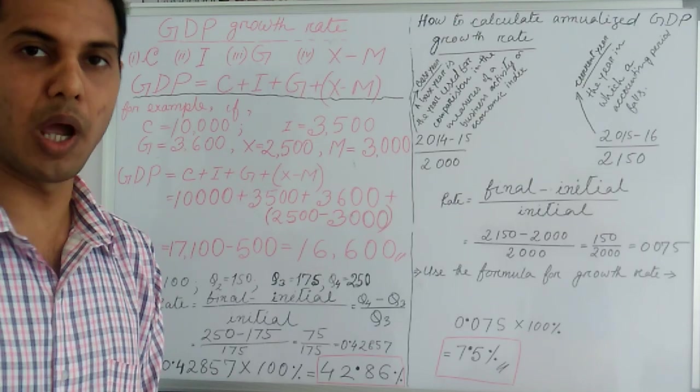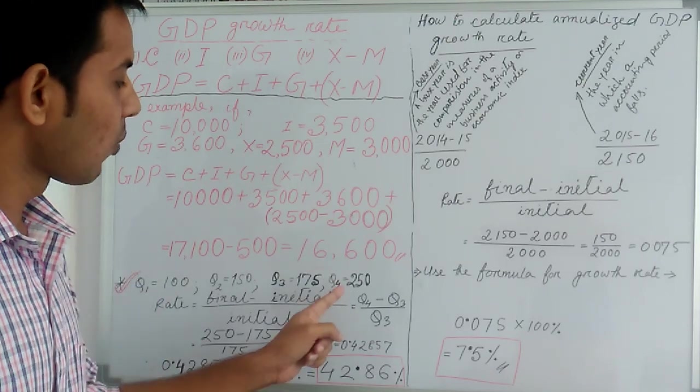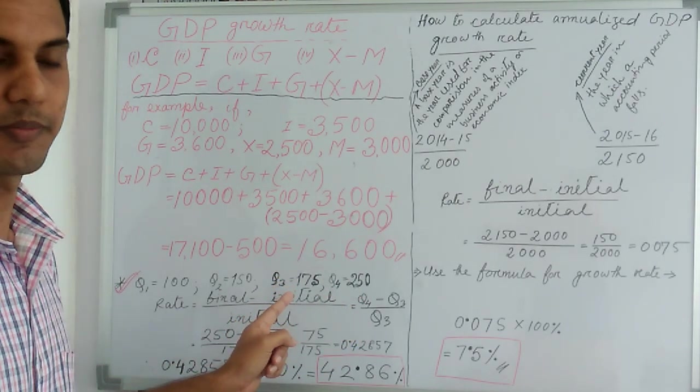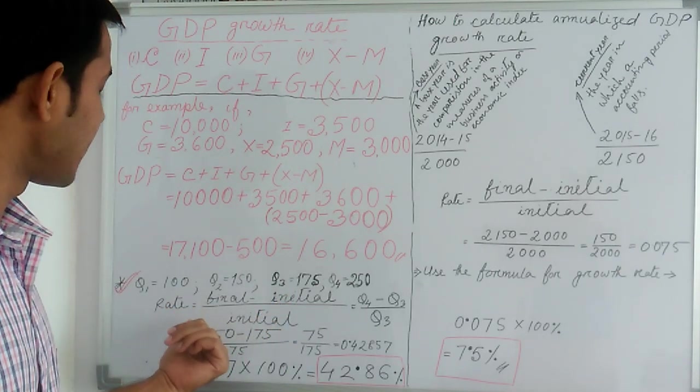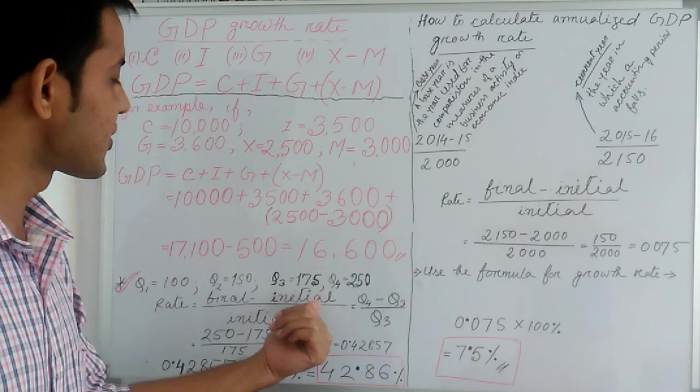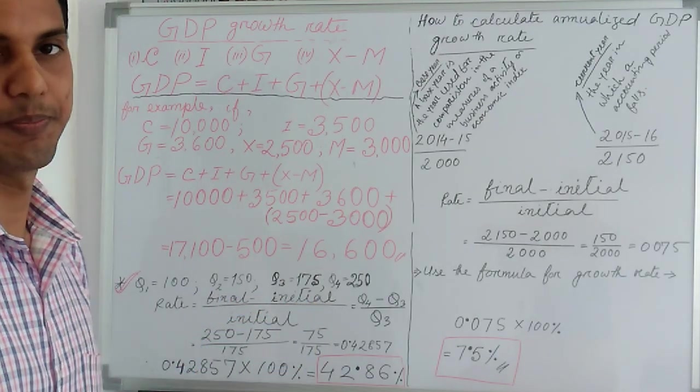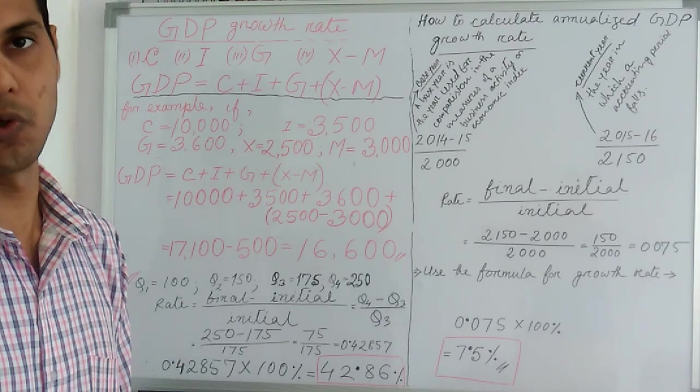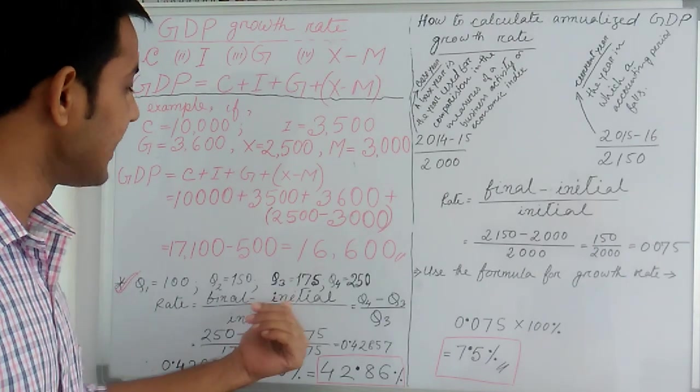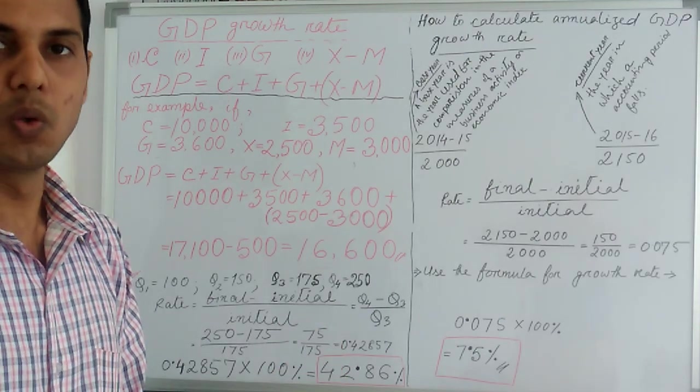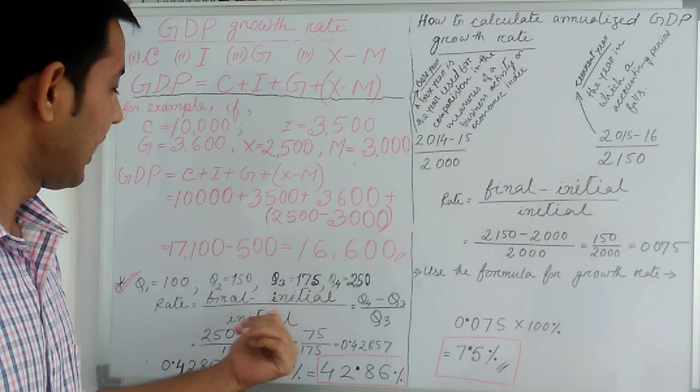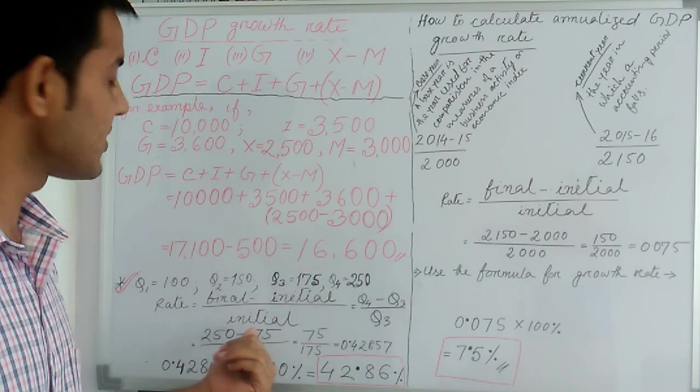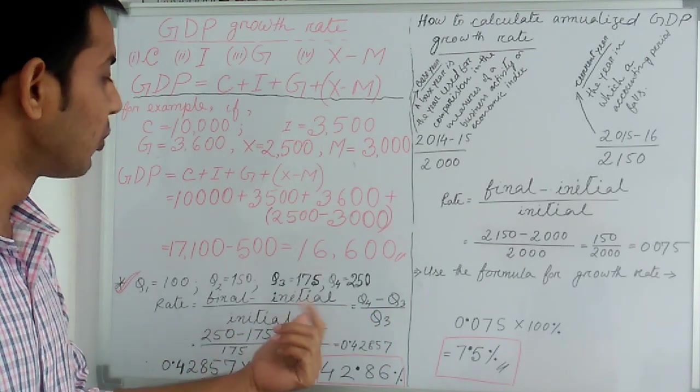Now we have to know the GDP growth rate in quarter 4 as compared to quarter Q3. So it's very simple. The rate equals final minus initial divided by initial. So final means we have to know the GDP growth rate in quarter 4, and initial means as compared to the quarter of Q3.